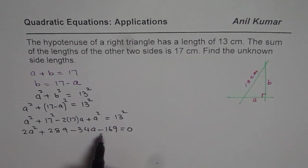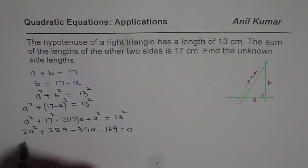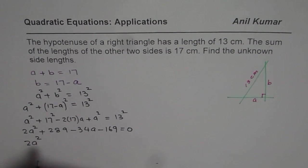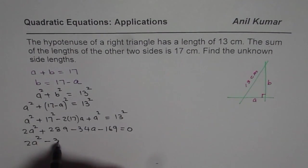Now combine the like terms, which are the constants in this case. So we have the equation as 2A² minus 34A.